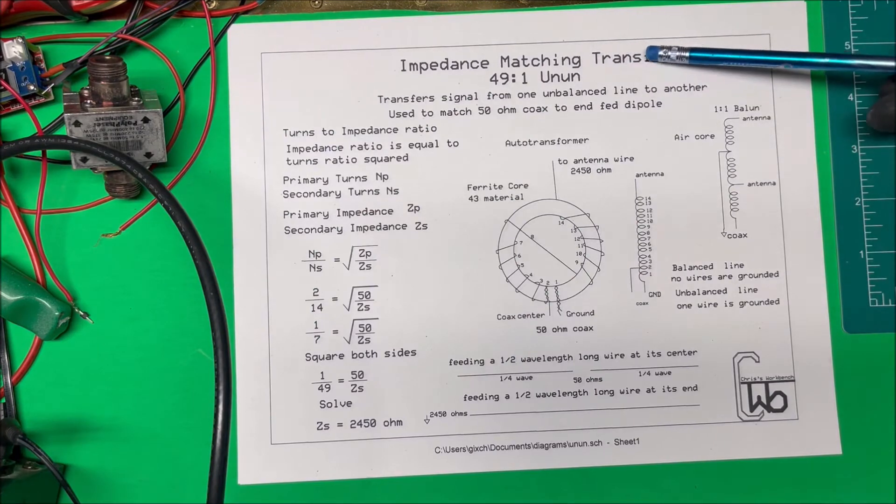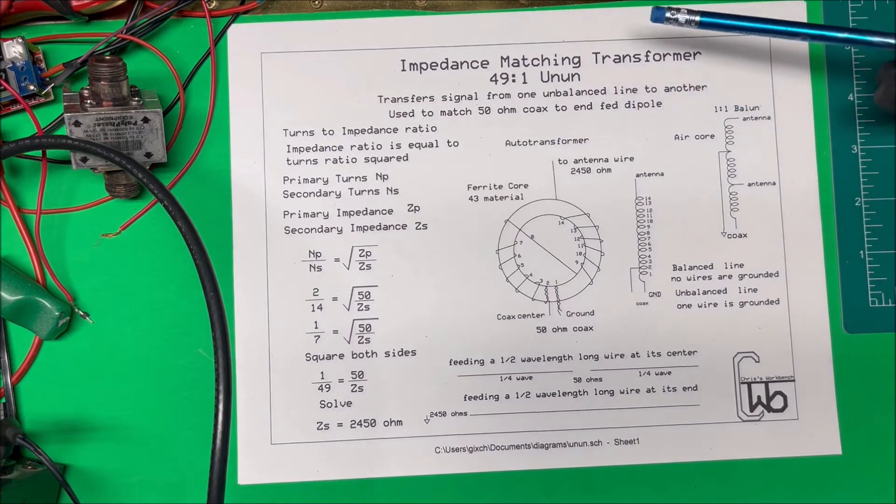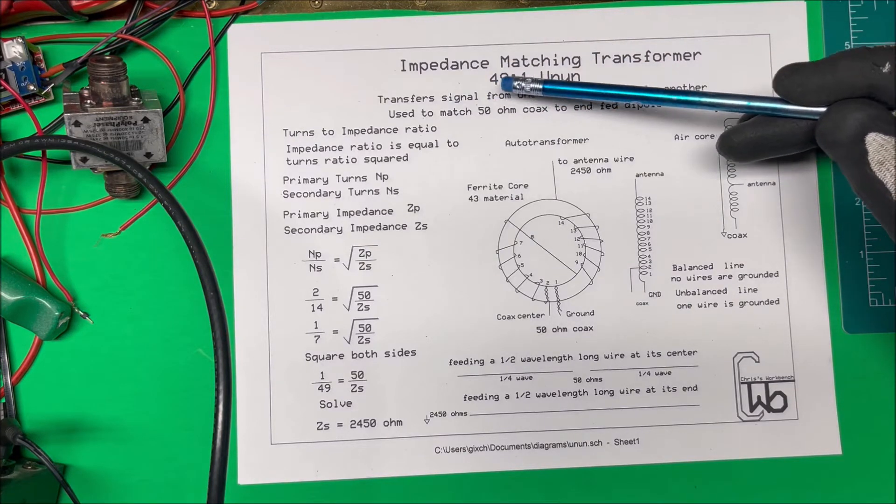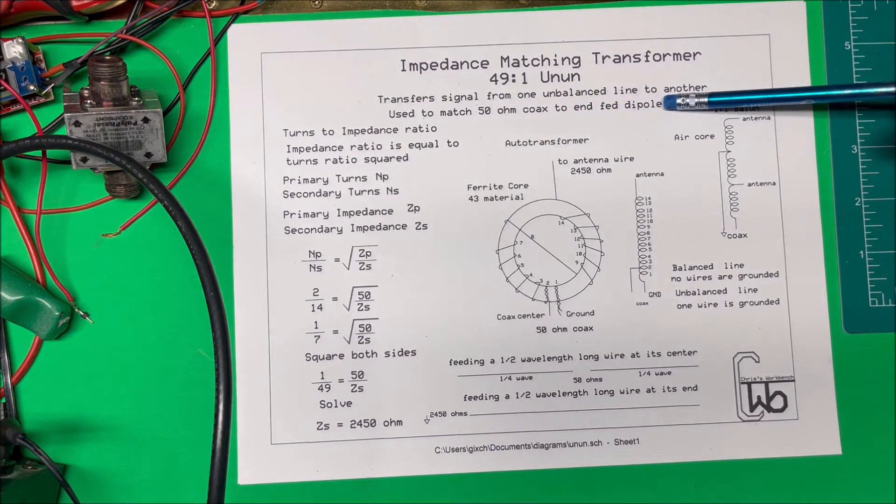Let's take a look at an impedance matching transformer. I put together a 49 to 1 unbalanced-unbalanced transformer and it transforms a signal from one unbalanced line to another and I'm going to use it to match a 50 ohm coax to an NFED dipole.